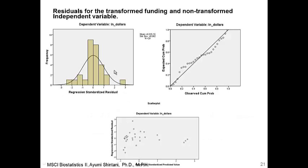After log-transforming the outcome variable, the residuals now look normally distributed, and the PP plot looks acceptable. However, looking at the residuals vs. fitted plot, the independent variable — reflected as predicted value — still appears skewed. Although this doesn't directly indicate a violation of assumptions, when you have a skewed independent variable it is better to transform it so it is more normally distributed, which often increases the power of the analysis.